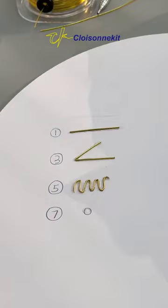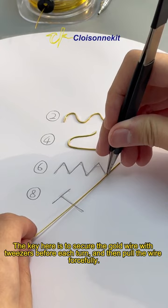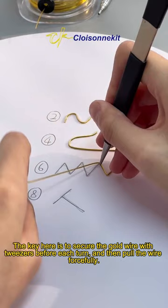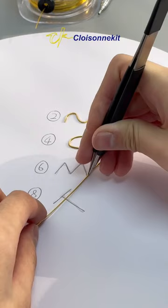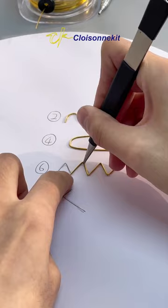The sixth pattern involves continuous sharp angle turns. Similar to the third one. The key here is to secure the gold wire with tweezers before each turn, and then pull the wire forcefully. Place the tweezers before the turn. Swing the wire and pull it tightly.